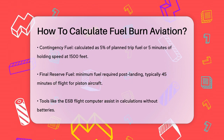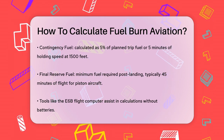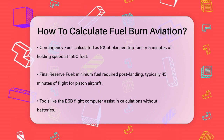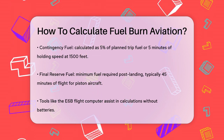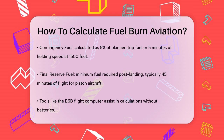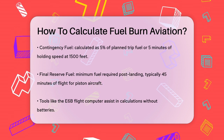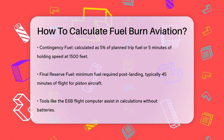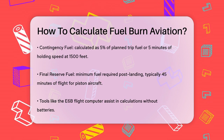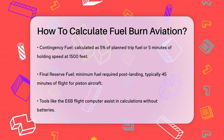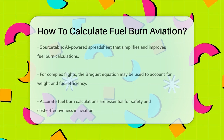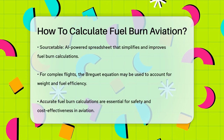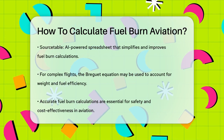To make these calculations easier, tools like the E6B Flight Computer or AI-powered spreadsheets like SourceTable can be very helpful. The E6B Flight Computer is a mechanical tool that can calculate time, speed, distance, and fuel burn without needing batteries. SourceTable integrates all relevant data into a powerful spreadsheet assistant, simplifying and enhancing the precision of your calculations.